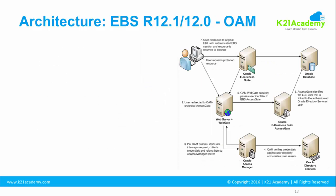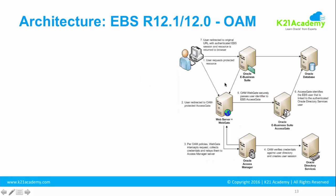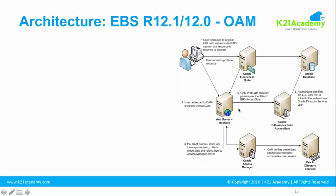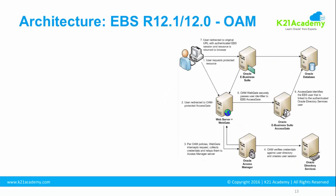EBS 12.1 integration is slightly different. In 12.2, AccessGate and WebGate always sit within the EBS application tier on the same machine. In 12.1 and 12.0, these two components can be on the same machine as the EBS application tier but outside its tech stack, or they can be on entirely separate machines outside Oracle eBusiness Suite. The next lesson will explain 12.1 and earlier release integration in detail.